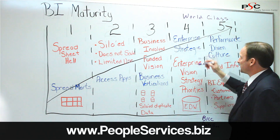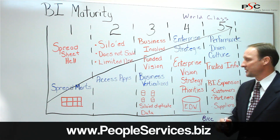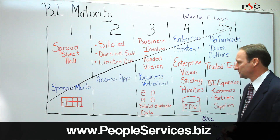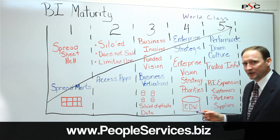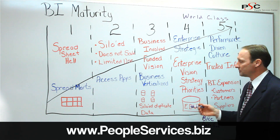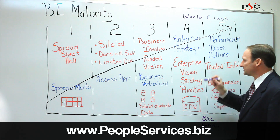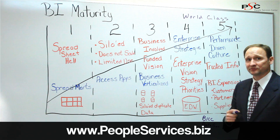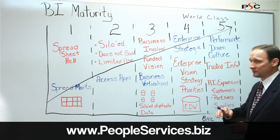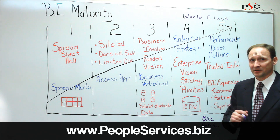Stage four is where organizations become more enterprise and strategic. We focus beyond the departments and look at how we can take data from siloed applications and put it into an enterprise data warehouse structure to support information collaboration and sharing across the enterprise. This requires the business to define a different vision, strategy, and priorities driven from an enterprise perspective, often led by C-level executives.